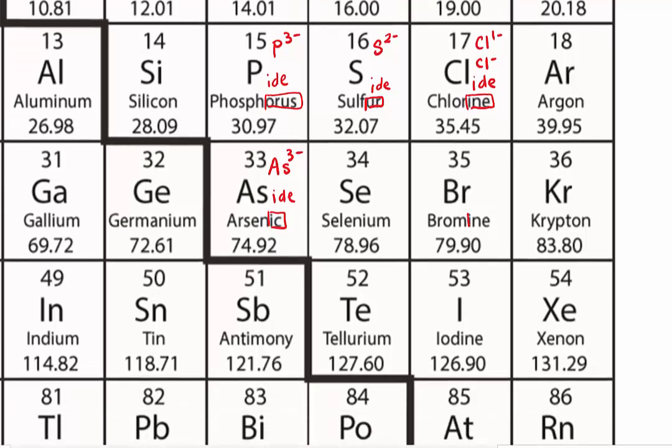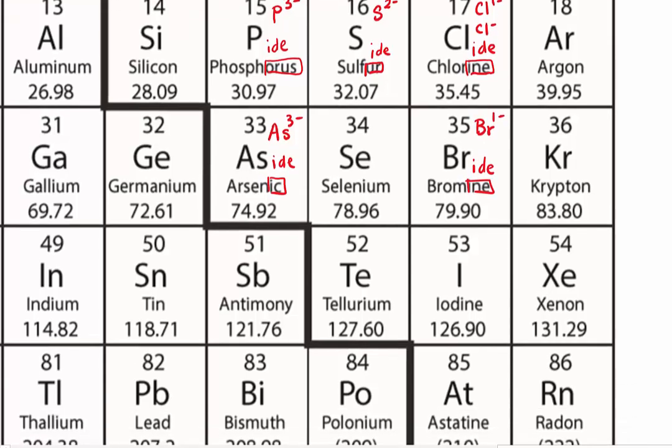Then we have bromine, of course the same ending as chlorine and fluorine. And we drop that ending, we add ide. And what's the formula for bromide, which is the ion of bromine? We have Br 1 minus, or Br minus only.